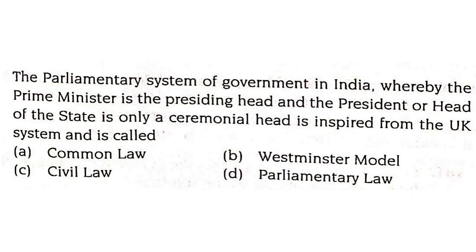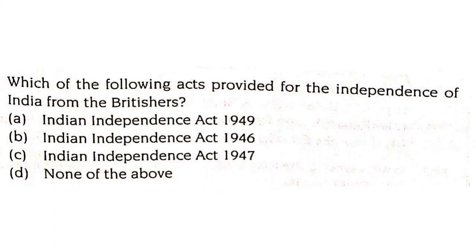The parliamentary system of government in India, whereby the Prime Minister is the presiding head and the President is only a ceremonial head, is inspired from the UK system and is called the Westminster model. Which of the following acts provided for the independence of India from the British? It is the Indian Independence Act 1947.